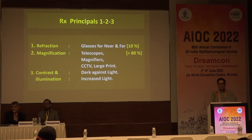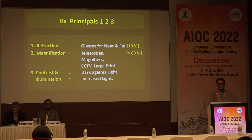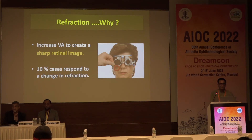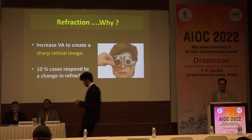Remember, many conditions that cause low vision are progressive and unpredictable, so there may be frequent changes in glasses. Also, people with visual impairment are more prone to falling, so if prescribing glasses to a visually impaired patient, we should use CR39 or polycarbonate glasses because they are non-breakable. Refraction is simply a way to sharpen the retinal image and is helpful in about 10% of visually impaired persons.